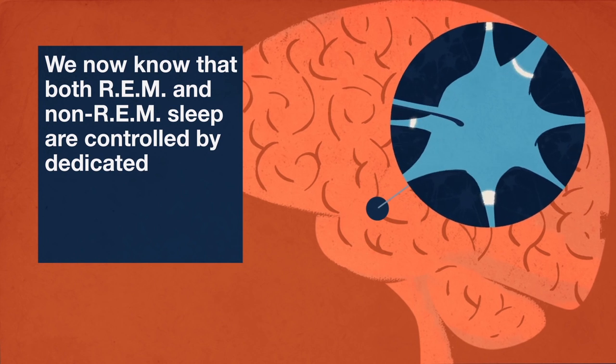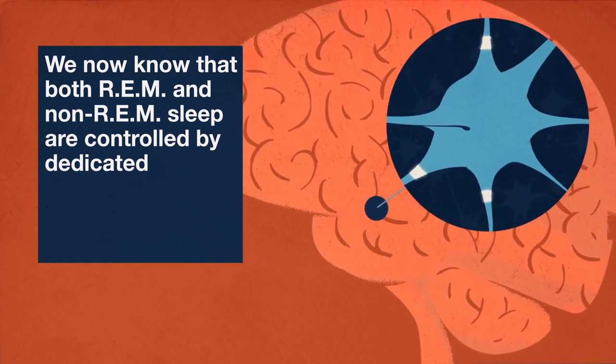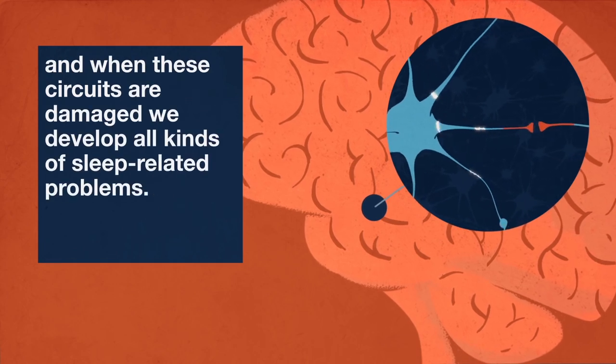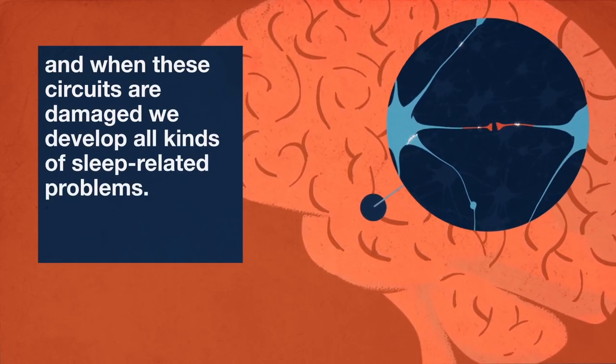We now know that both REM and non-REM sleep are controlled by dedicated, precisely wired circuits in the brain. And when these circuits are damaged, we develop all kinds of sleep-related problems.